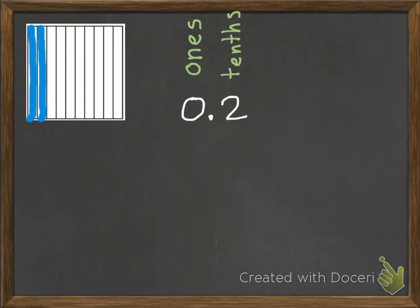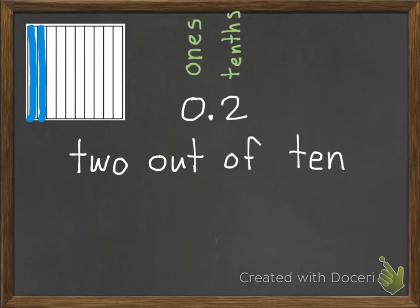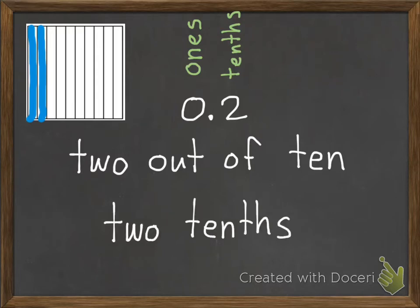If I wanted to use words to describe two tenths, I could describe it as two out of ten equal parts. Or in word form, simply two tenths.